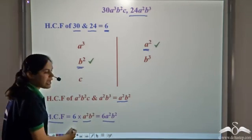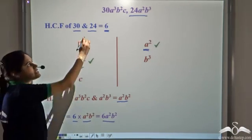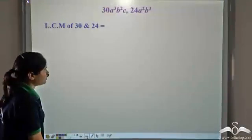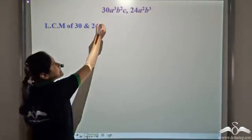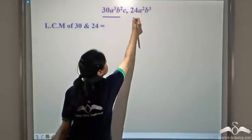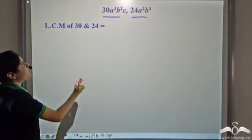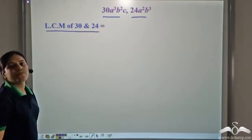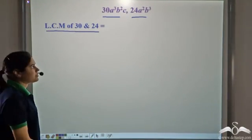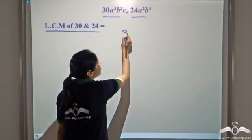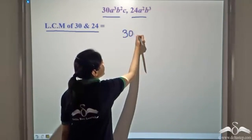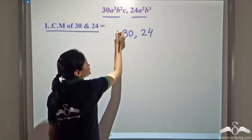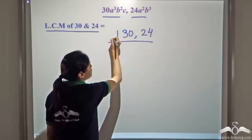This is how you calculate the HCF of two or more terms. Now let's calculate the LCM of these two terms. First we calculate the LCM of the numerical part. We have 30 and 24 — we factorize them.